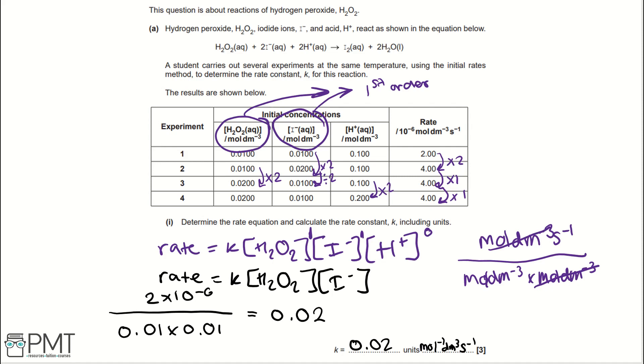For this question, you get a mark for the correct rate equation, a mark for the correct K value, and a mark for the correct units.